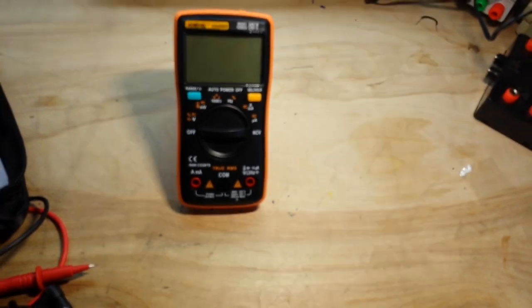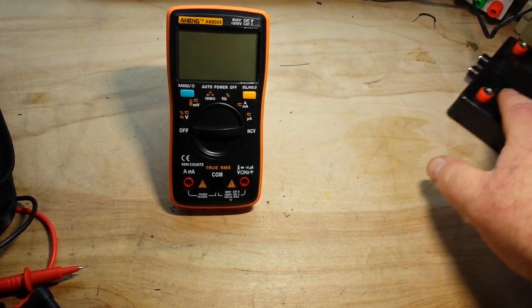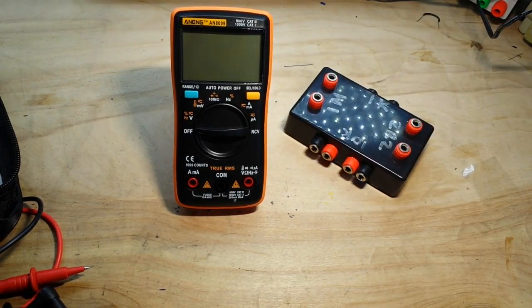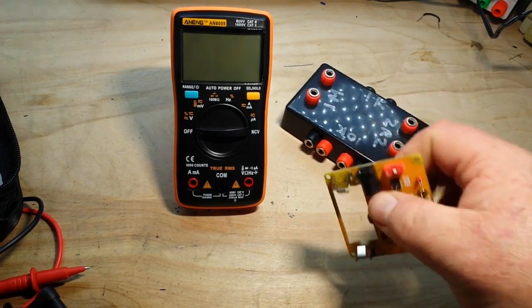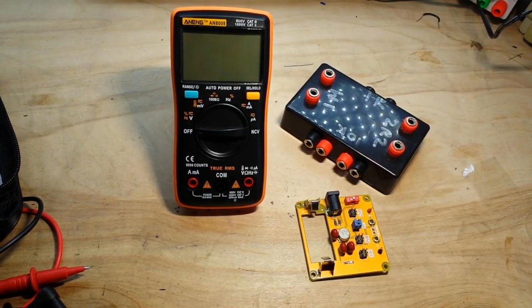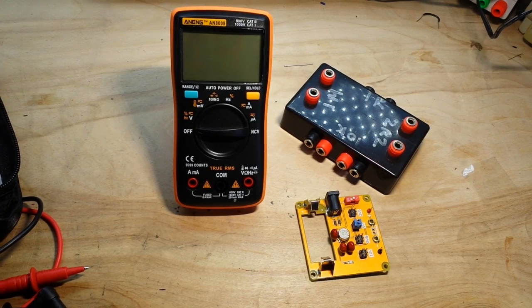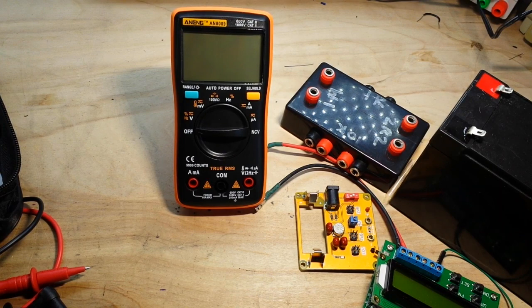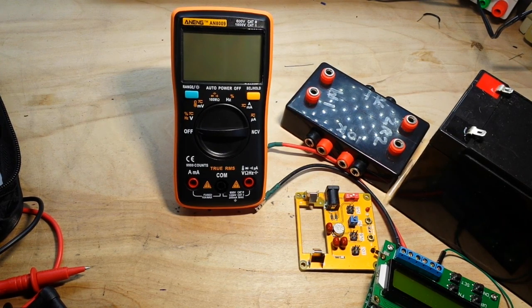Alright, so I have some of the stuff we're going to be using for testing here. We have our voltage standard. Sorry, that's resistance standard. We have a voltage standard. We have a current standard. And we're going to power it off from a battery. So let me get this all set up and we'll see how she does.